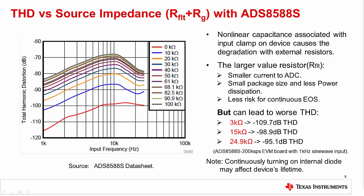This slide shows a figure from the ADS8588S datasheet that demonstrates how THD is degraded by adding an external series resistance to the input. The reason that this series resistance impacts performance is that it interacts with the nonlinear input capacitance, and therefore distorts the input signal. This nonlinearity is caused by the capacitor's large voltage coefficient. As you would expect, as the input resistance increases, the input current decreases, which protects the device from electrical overstress.